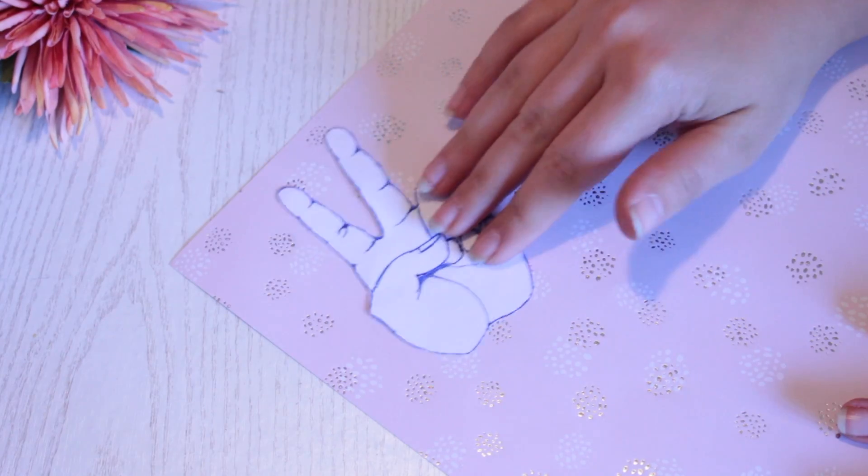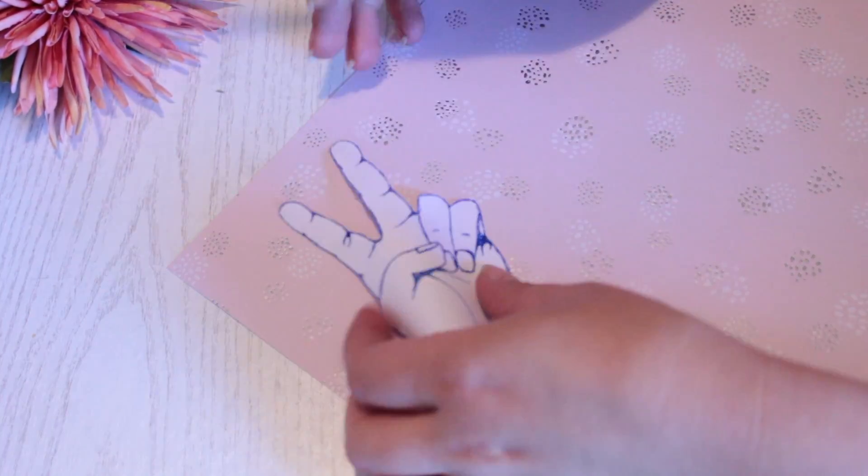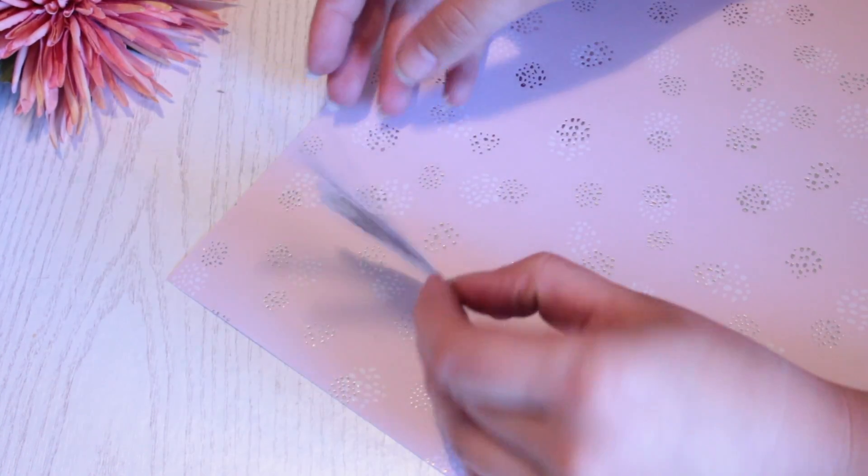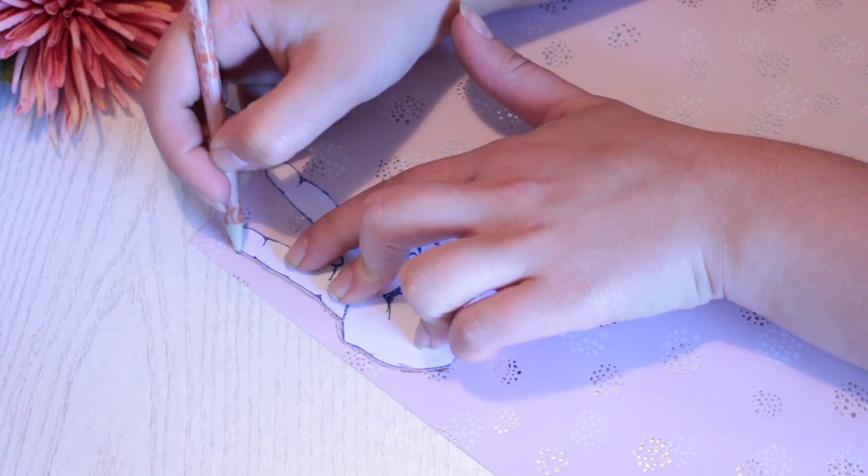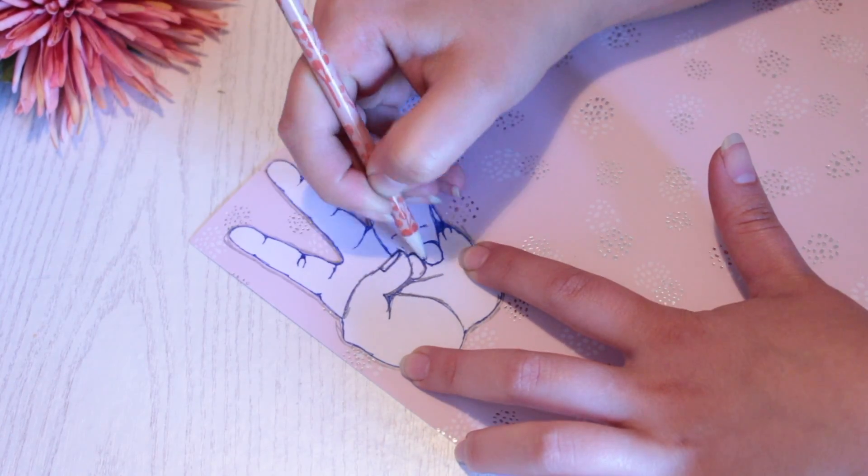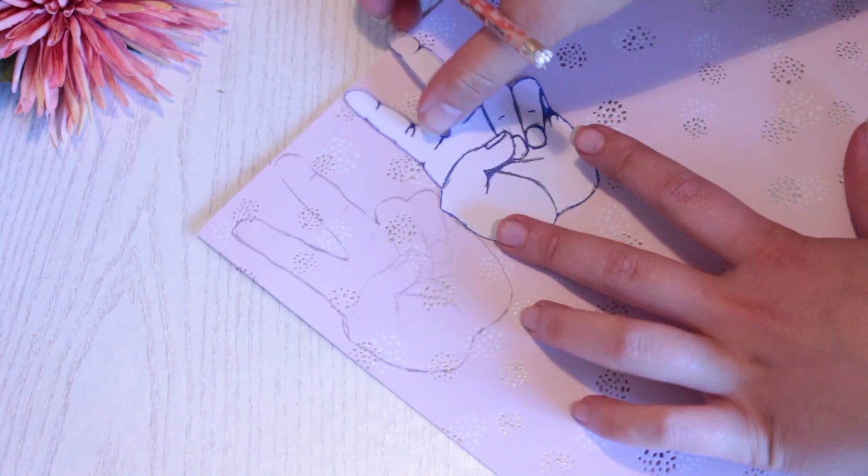Then cut it out. Now before sketching around this stencil, turn it over and sketch all over the back of it. Then turn it over again and sketch all over the image, even on the middle of it. And this is a way of transferring the image onto another paper.